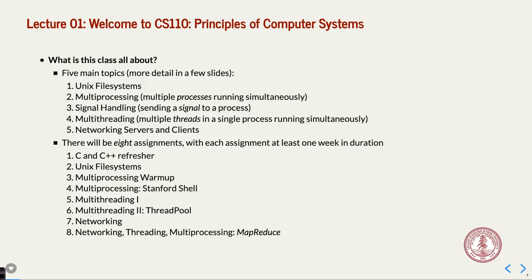The third thing, which is part of multiprocessing, is signal handling. If you have multiple processes going at the same time, you might want them to talk to each other. When you do this thing called fork, you get a parent process and a child process, and if you want to communicate between them — or if the parent wants to know when the child has finished — signals get sent.